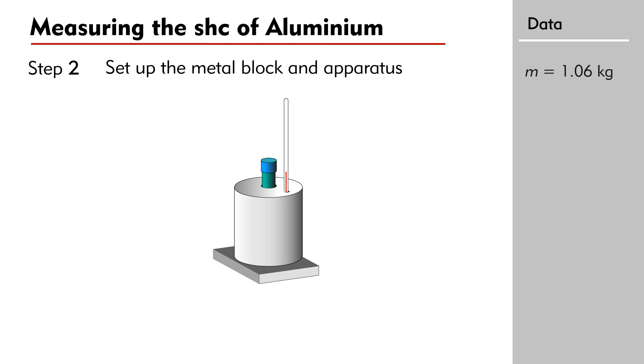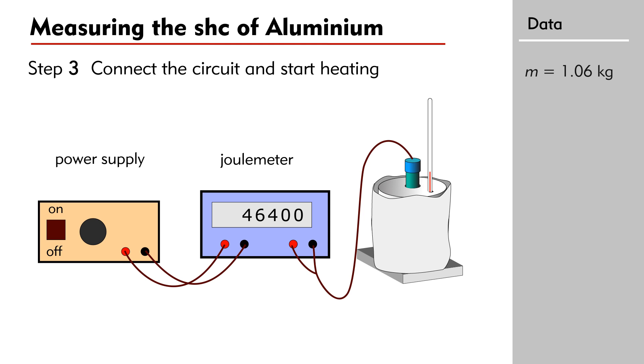Place the metal block on the polystyrene tile. Wrap the metal block with cotton wool. Now, connect the immersion heater to the power supply through a joulemeter. Record the initial joulemeter reading E₀ and the initial temperature T₀.